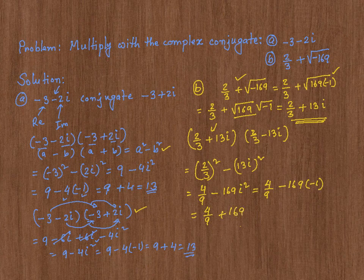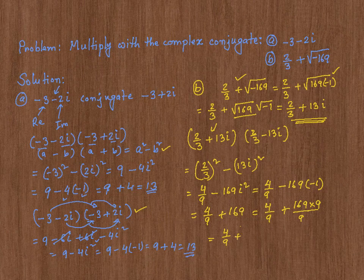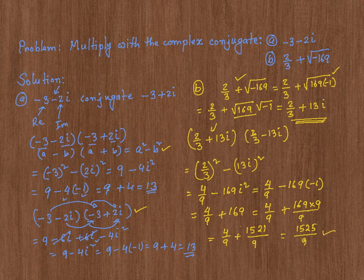We need to simplify further. Making the denominator the same: 4 over 9 plus 169 over 9 times 9. That gives us 4 over 9 plus 1521 over 9, which equals 1525 over 9. And that's your answer. I hope this discussion was helpful. Thank you very much.